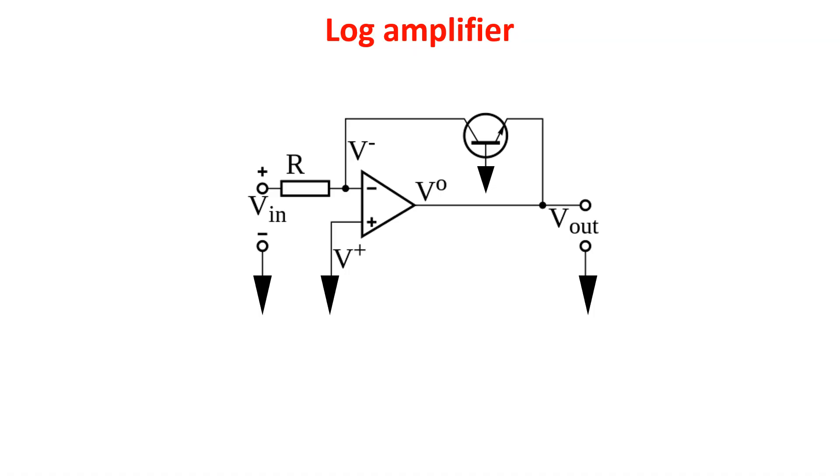Here you see the logarithmic amplifier. It is made by an operational amplifier with a negative feedback. In the feedback loop there is a BJT used in a transdiode configuration, so the collector and the base of the BJT have the same voltage.